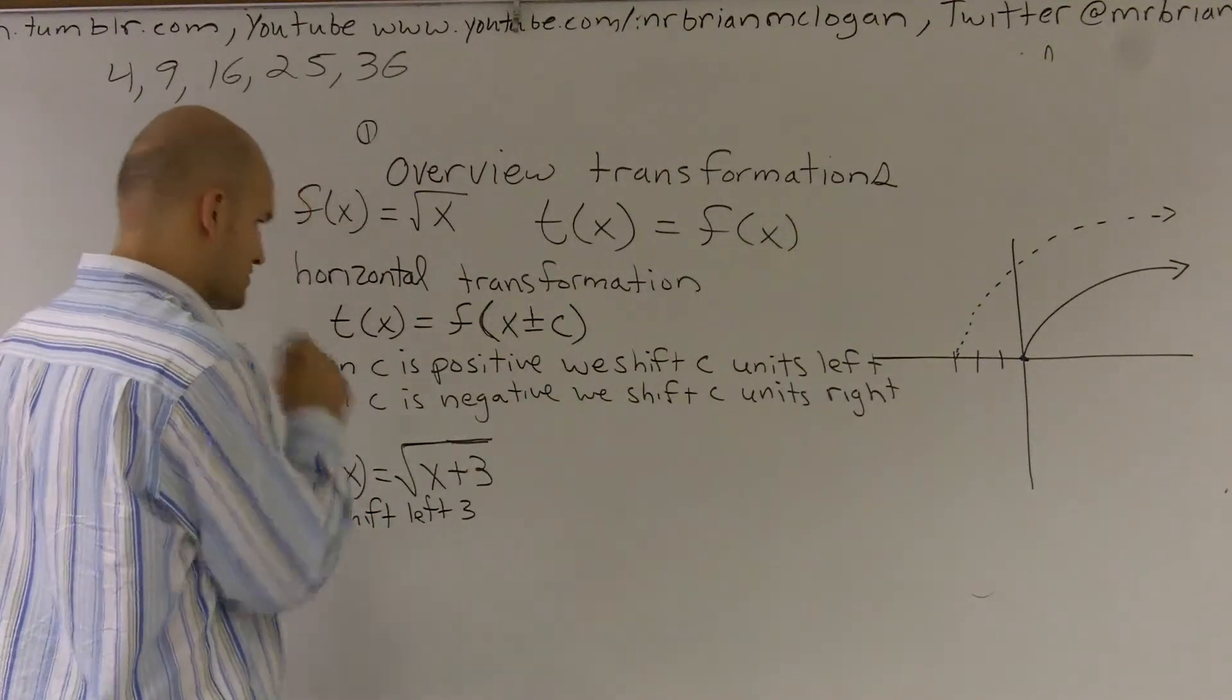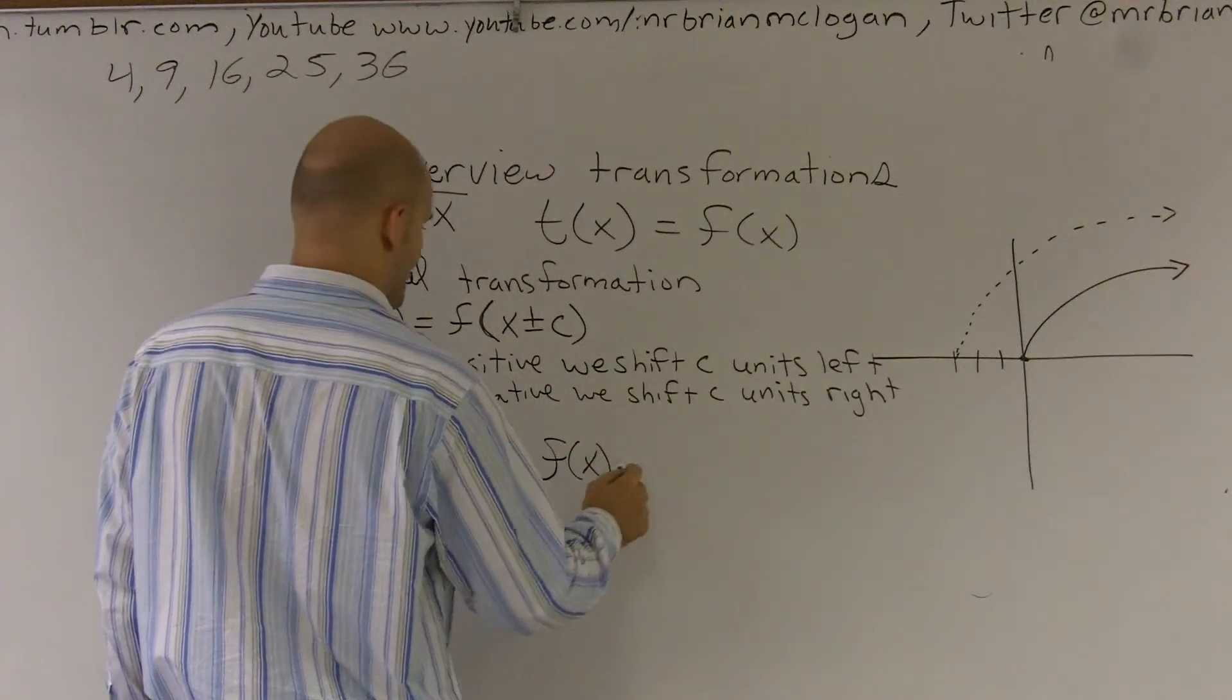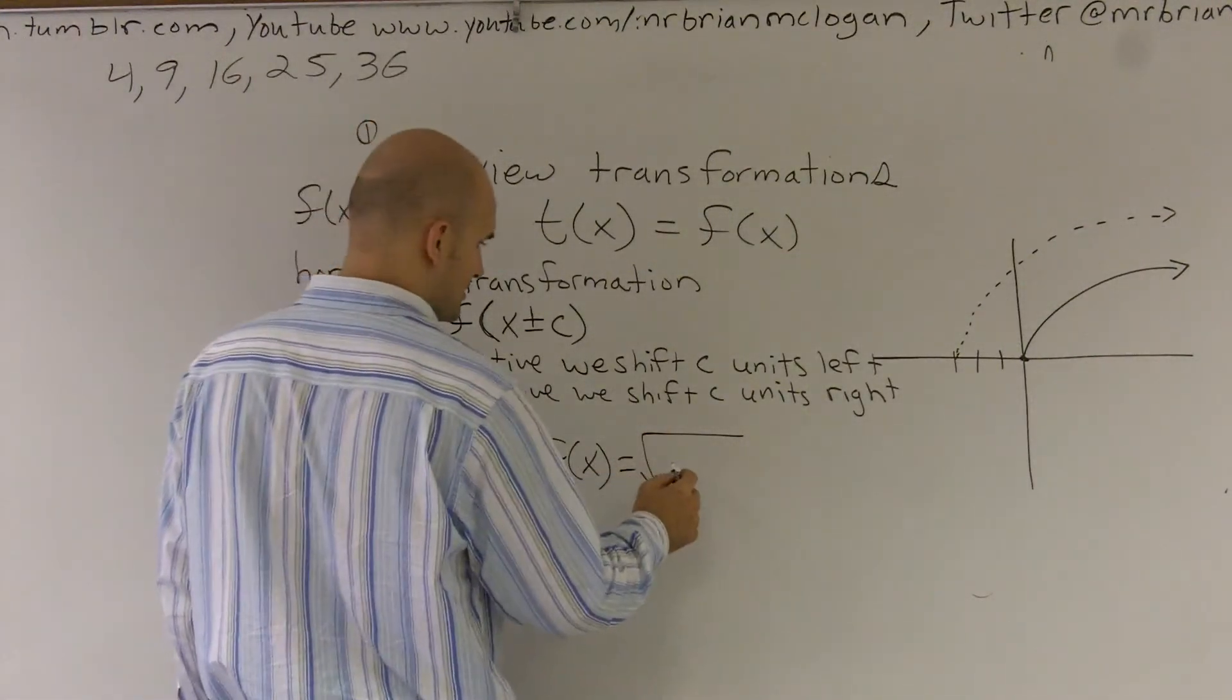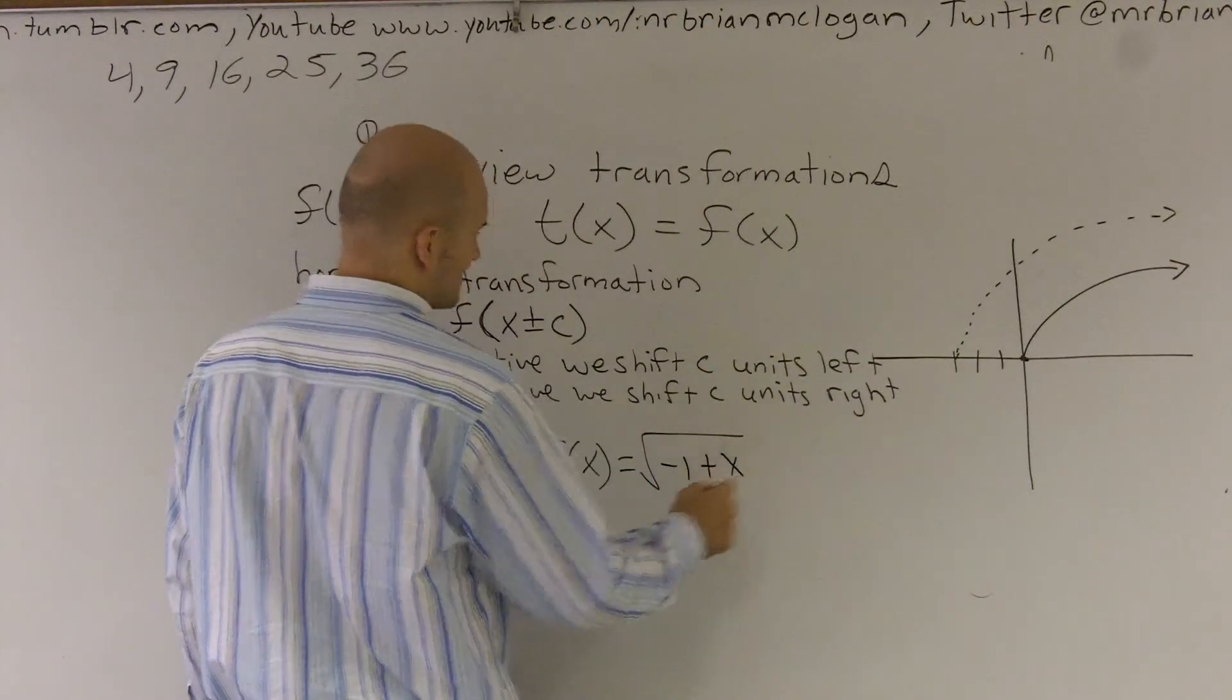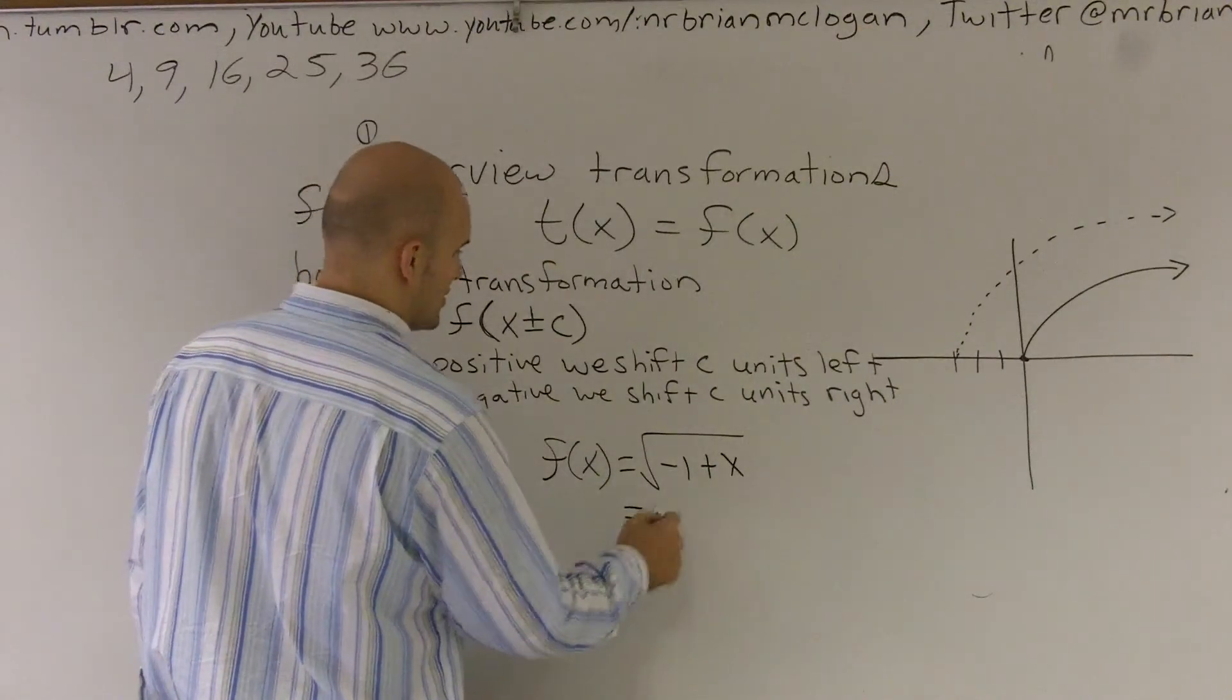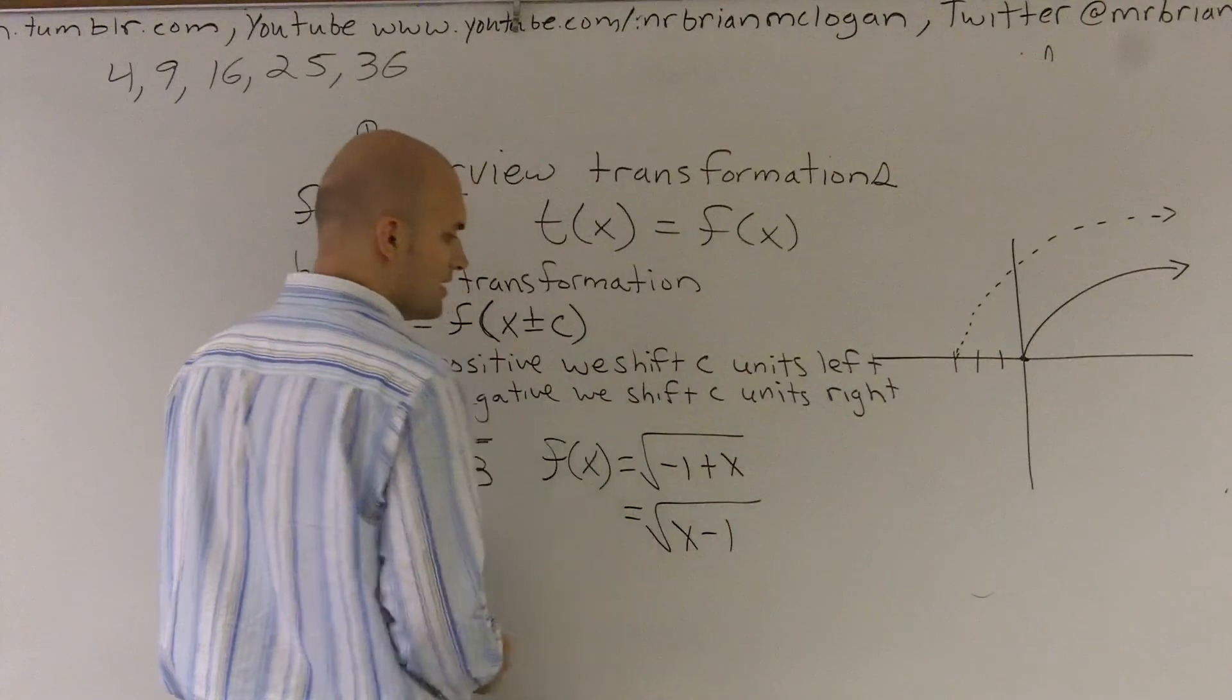Furthermore, let's do another one. f(x) equals the square root, again, I'll just kind of be negative 1 plus x. I'm just rearranging the variables. We should know that we can just rewrite these as x minus 1.